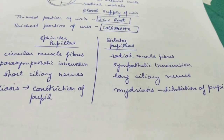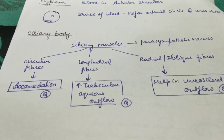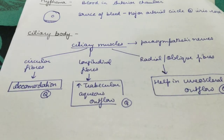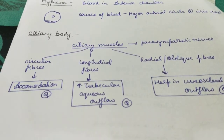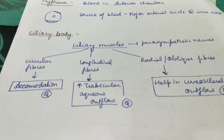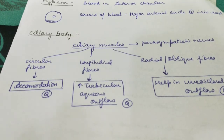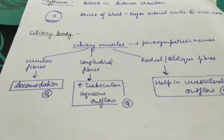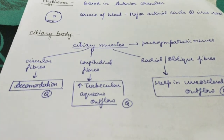Hyphema means blood in the anterior chamber. The source of bleeding is the major arterial circle at the root of the iris, which is the most common source of bleeding in the anterior chamber — that is known as hyphema.